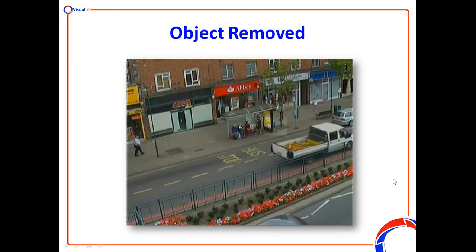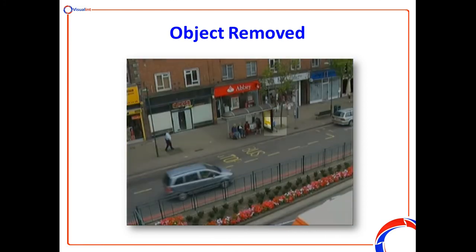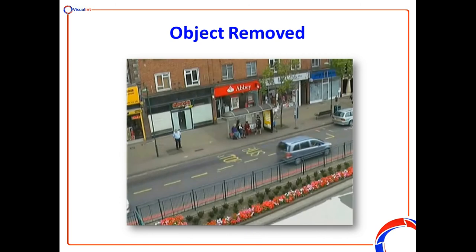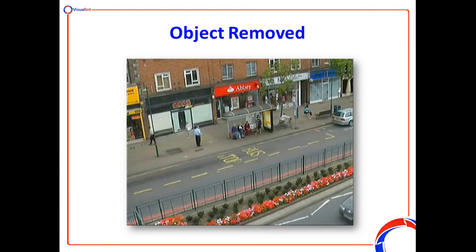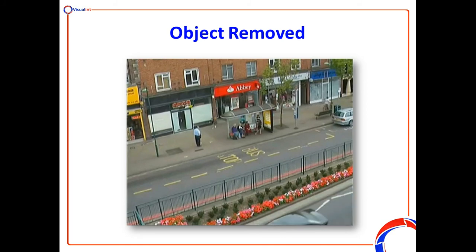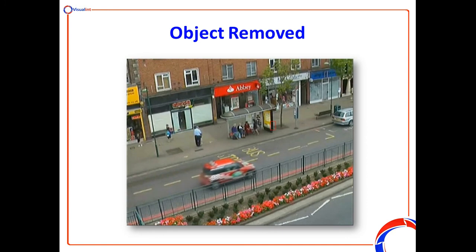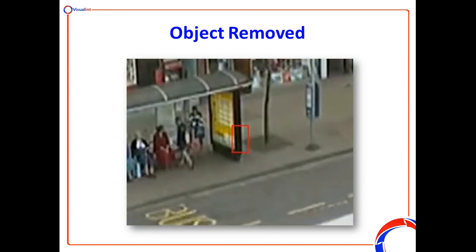Equally we can do the opposite — we can identify when an object is removed. There's a bicycle leant up against that bus shelter, and we want to track if it's removed. An individual has picked up the bicycle and wheeled it away, and again after a configurable preset amount of time, we can trigger an event based on the fact that the object has been removed from that scene. A red square appears, and that could trigger an event, an email, or whatever we want to notify the appropriate person that the object has been removed.